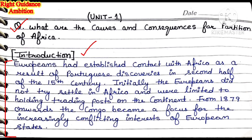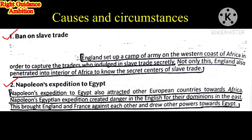Every European country wanted to be powerful and use the raw materials of Africa. European states like France, Britain, and Portugal were all interested in the raw materials and resources of the African continent. Now put the heading: Causes and Circumstances.